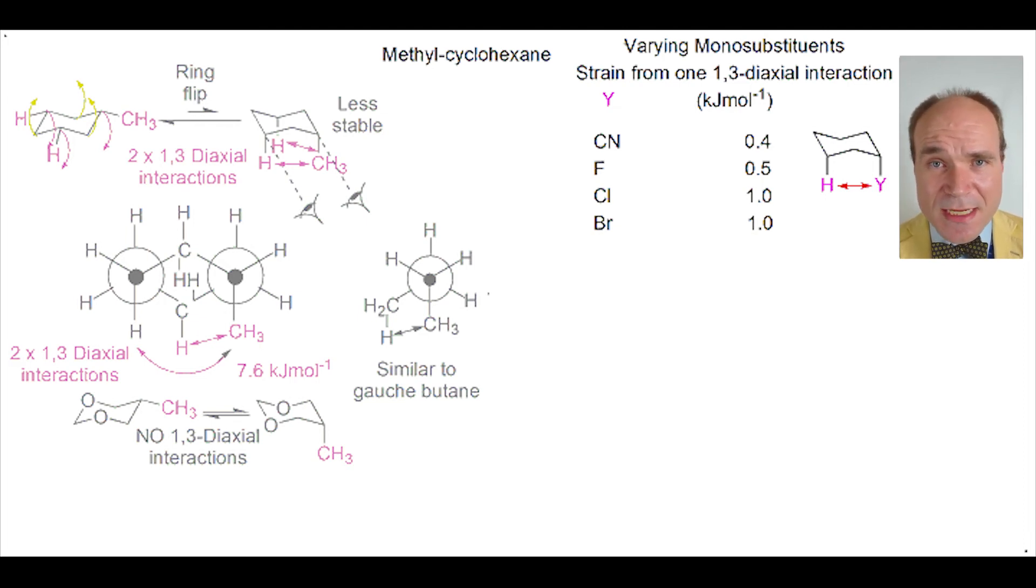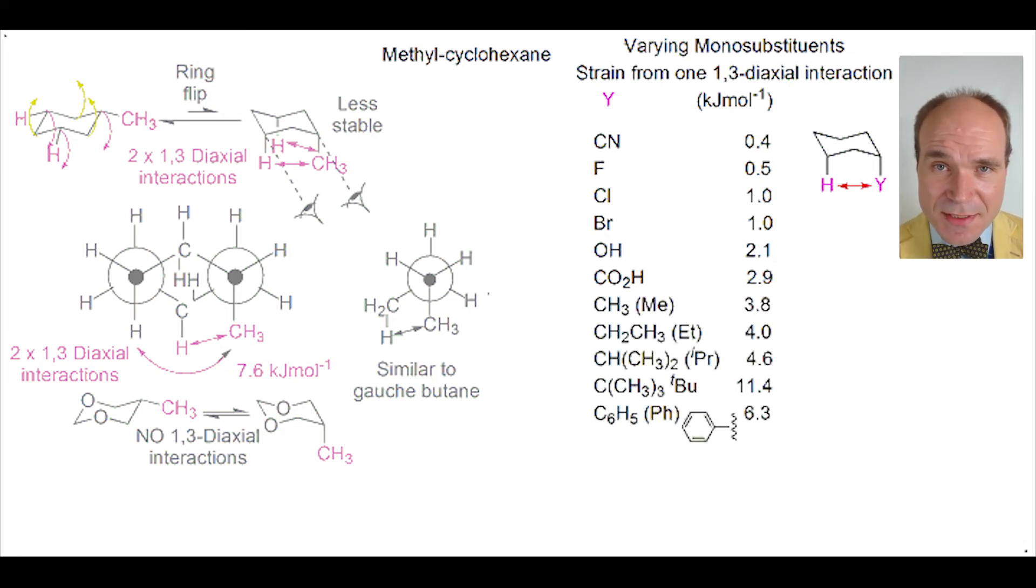Where the substituent is larger, the amount of energy created by the 1,3-axial interaction is also bigger. And if we have very big substituents, the energy caused by the 1,3-diaxial interaction also significantly increases.